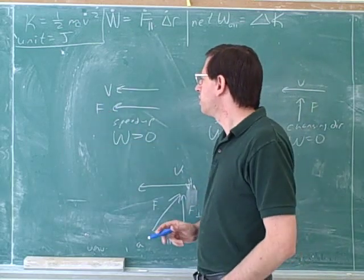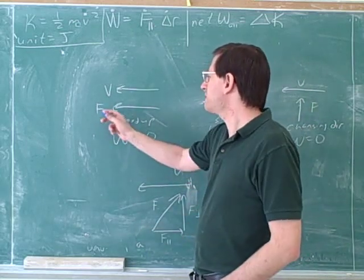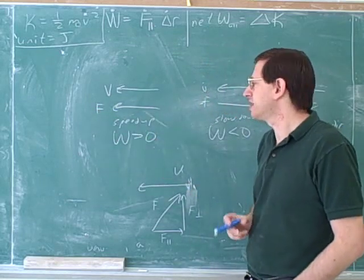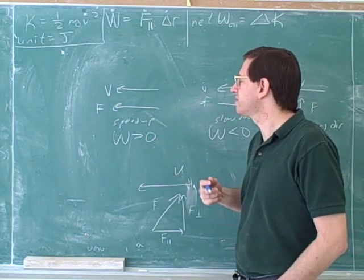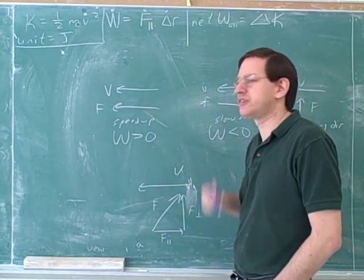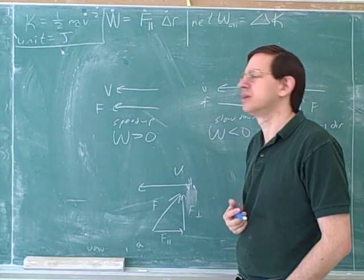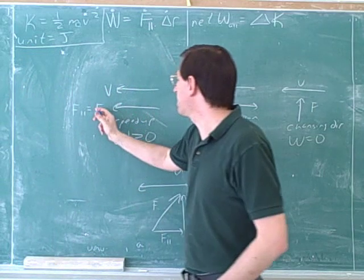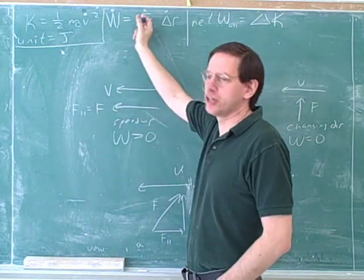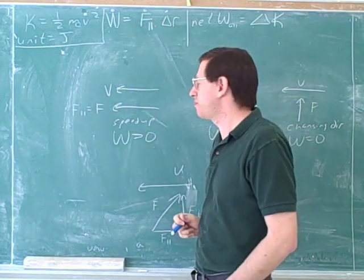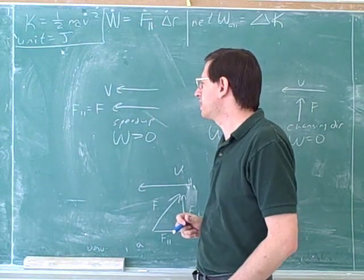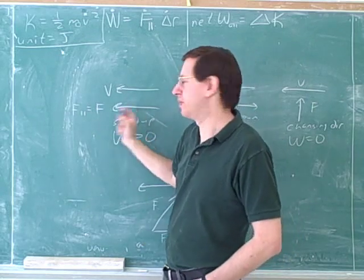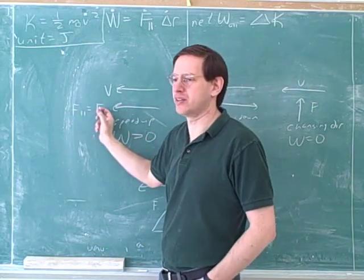Going back to here, what would we say is the component of the force that is parallel to the velocity? Is it the entire force, a component of the force, or is it zero? The entire force. So in this case we would plug this entire force into this equation. Sometimes that messes people up — they know they're only supposed to plug in the component that's parallel, and they get confused when the whole force is parallel. But here we would say these are the same thing.